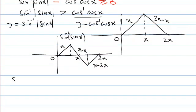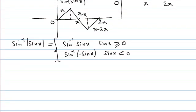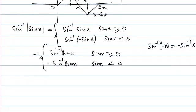Here we have sin⁻¹|sin x|, which equals sin⁻¹(sin x) when sin x ≥ 0, and sin⁻¹(−sin x) when sin x < 0. Since sin⁻¹(−x) = −sin⁻¹(x), this becomes −sin⁻¹(sin x) when sin x < 0. So we can draw this graph using the graph of sin⁻¹(sin x) with a piecewise definition.